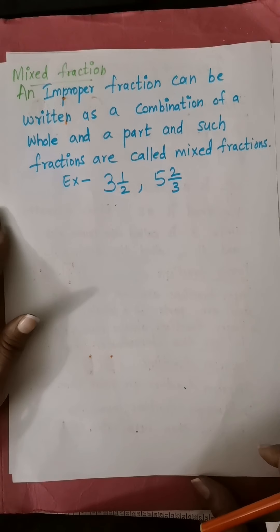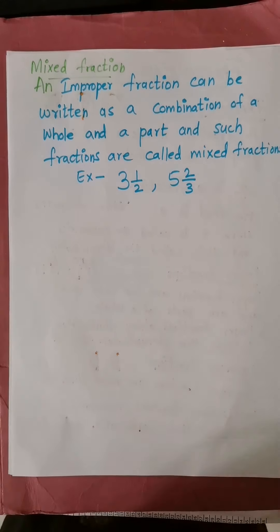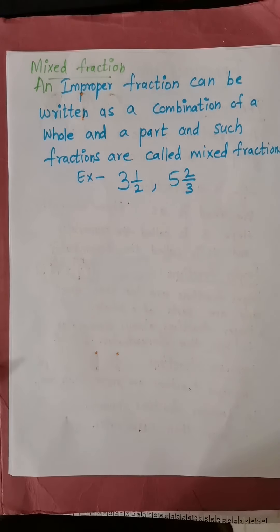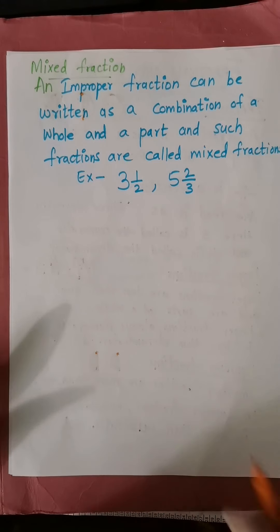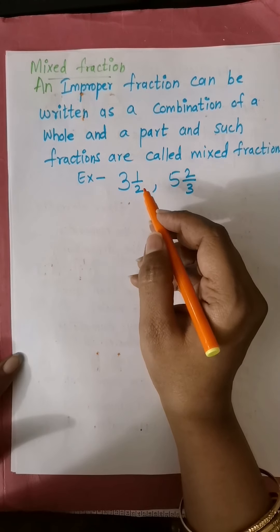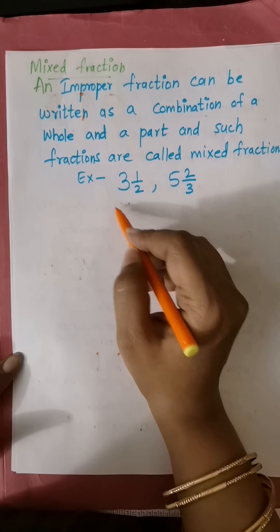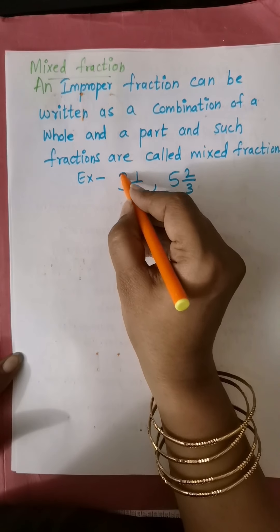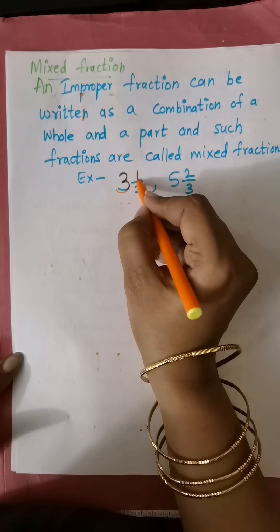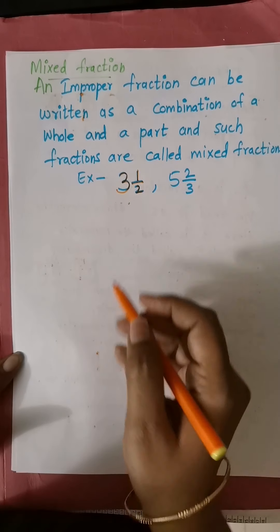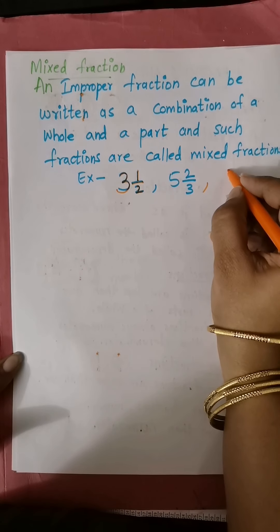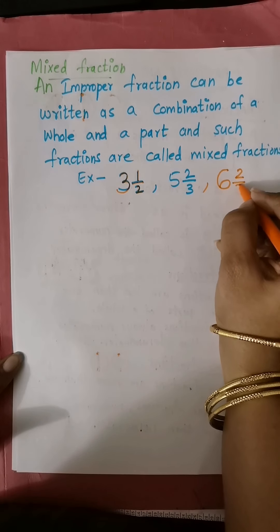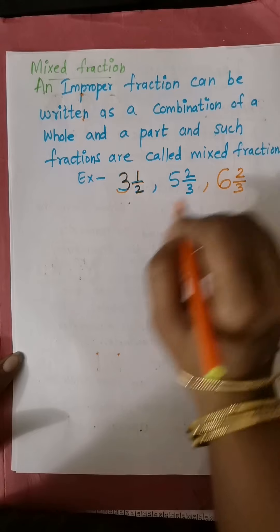One more type of fraction is called mixed fraction. An improper fraction can be written as a combination of a whole number and a part, and such fractions are called mixed fractions. For example, there are three whole parts and one more half part. When writing a mixed fraction, the whole number part should be written bigger and the fraction part smaller — for example, 6 and 2/3.